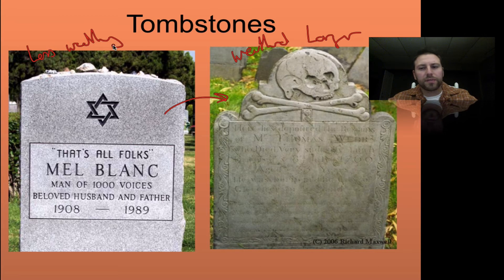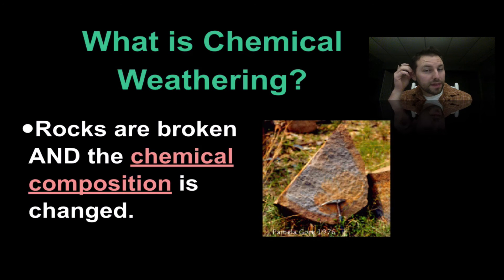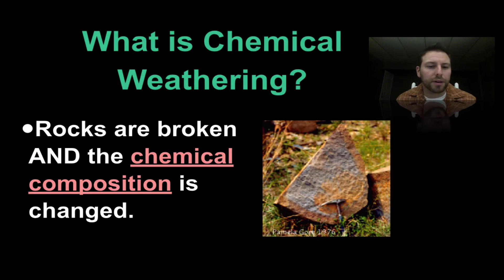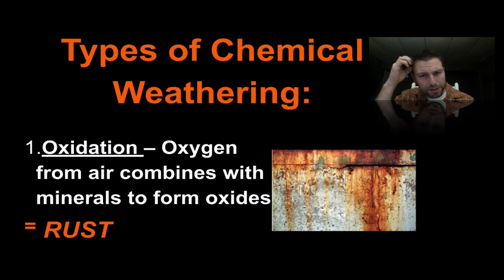There is also a difference in materials that we'll talk about later on. The next type of weathering we'll talk about is chemical weathering. In chemical weathering, the actual chemical composition of the material is changed, versus physical weathering where it is not.